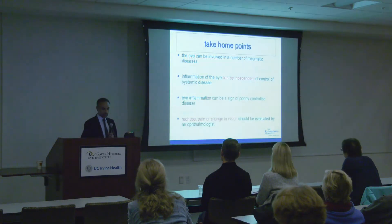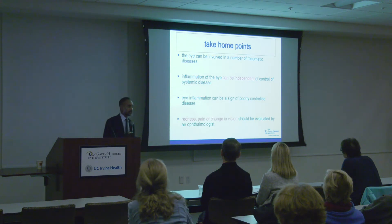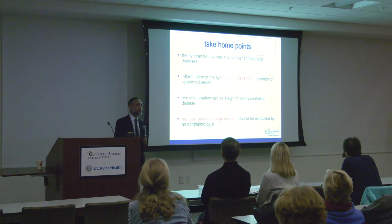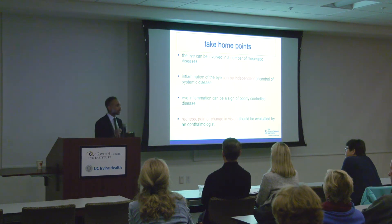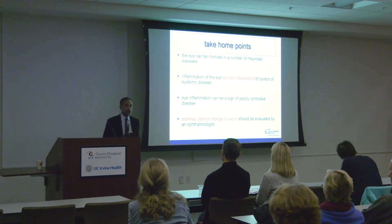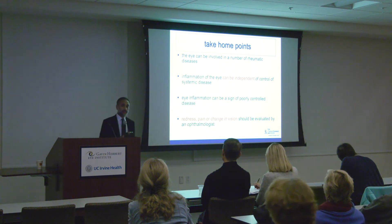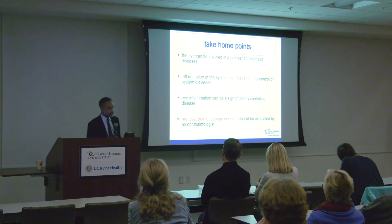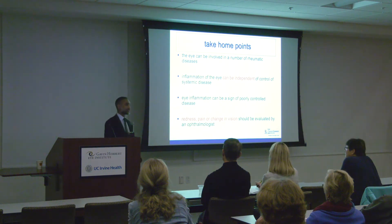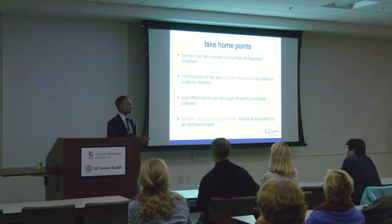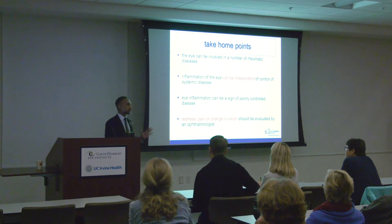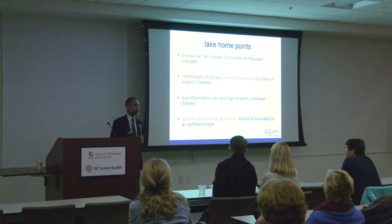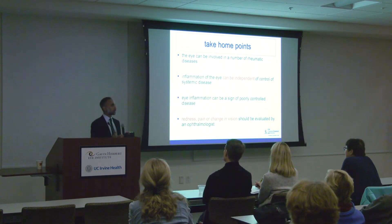The most important points we're going to discuss today are: first, to realize that the eye can be involved in a lot of so-called rheumatic diseases. These are diseases that might affect your joints — rheumatoid arthritis or lupus. In the same way that they may affect your joints or other organs in your body, they can affect your eyes as well. You should also remember that inflammation in the eye can be independent of control of your systemic disease. Some people have rheumatoid arthritis, they're on medications, their joints seem under good control, but the eye can still become inflamed.